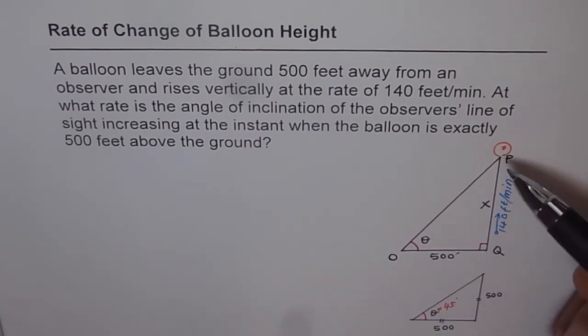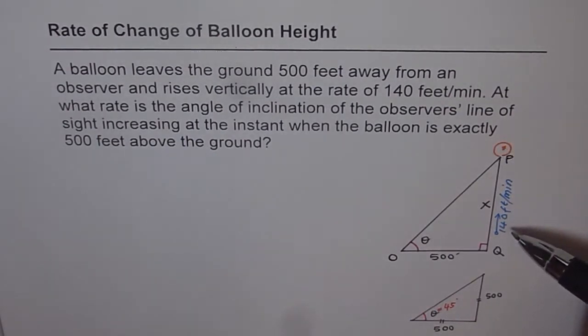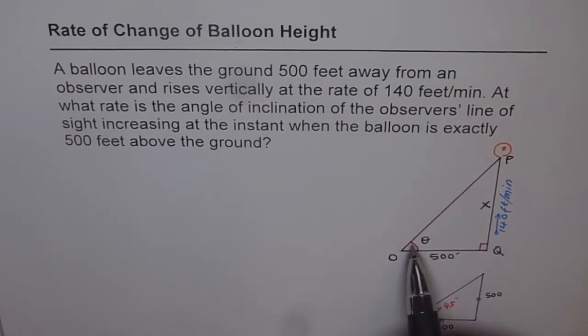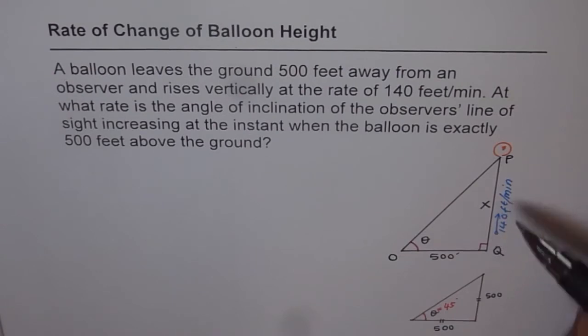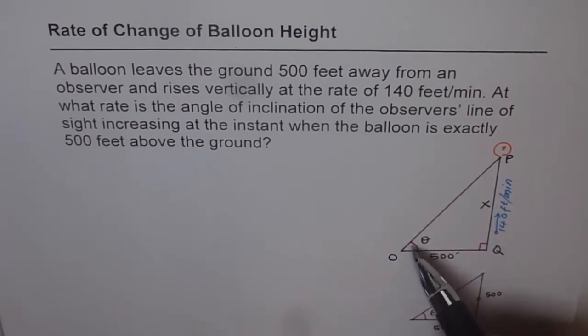Only the height changes and rate of change in the height of the balloon is also given to us. What we need to find is the rate at which this angle is changing. Since the balloon rises, this angle, the line of sight angle changes.